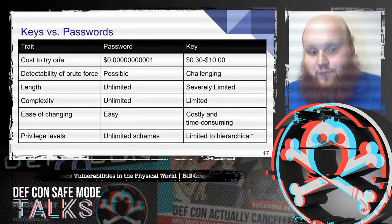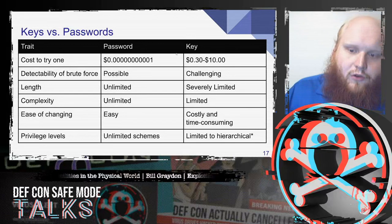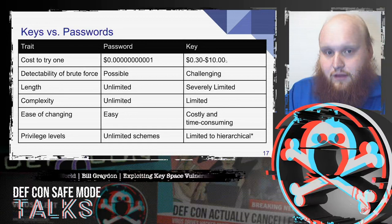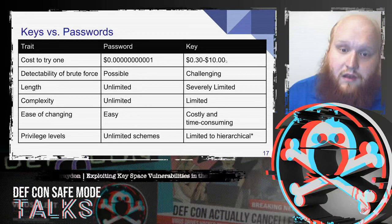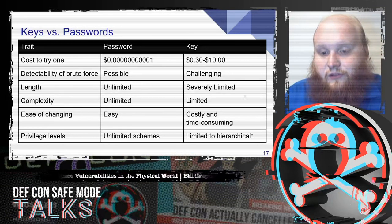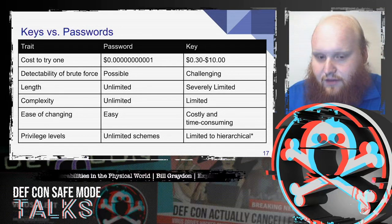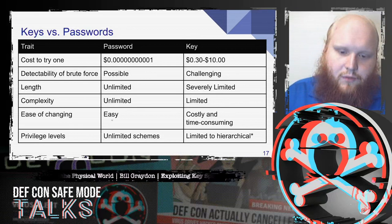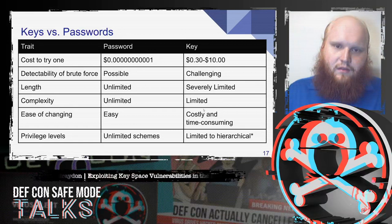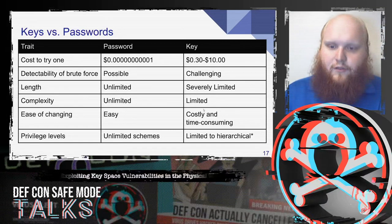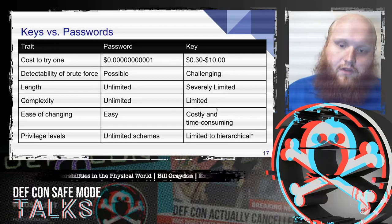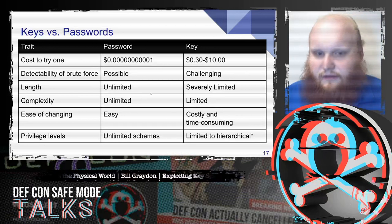We can take a brief look at keys versus passwords in terms of brute force ability. The cost to try a password is very close to zero; in the case of a key it's quite expensive — we have to pay for the blank, cutting the key, and our time to physically try it. Keys are severely limited in both length and complexity due to their mechanical nature, whereas passwords can be unlimited. And if a password gets compromised it's easy to change, but a key is very costly and time consuming. With mechanical keys, things are harder for both the red team and the blue team — it's harder to brute force, but if a vulnerability is discovered it's also much harder for the blue team to mitigate it.